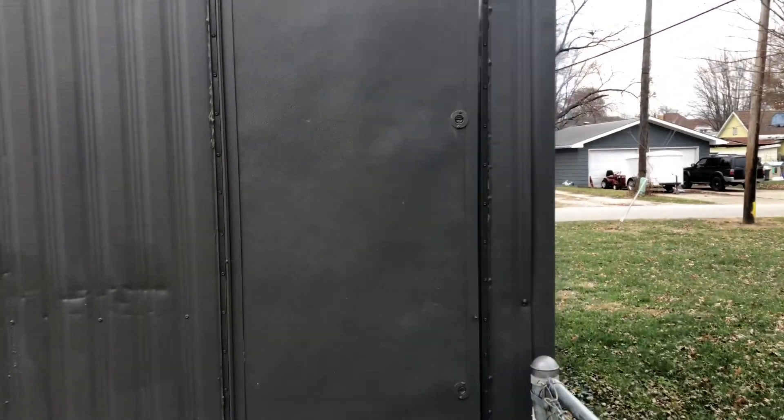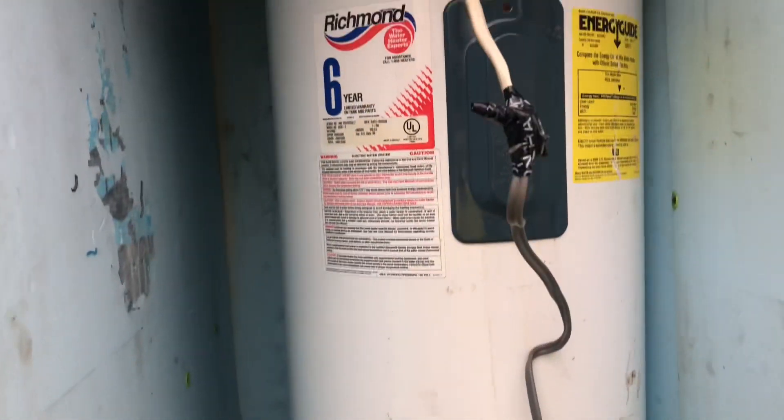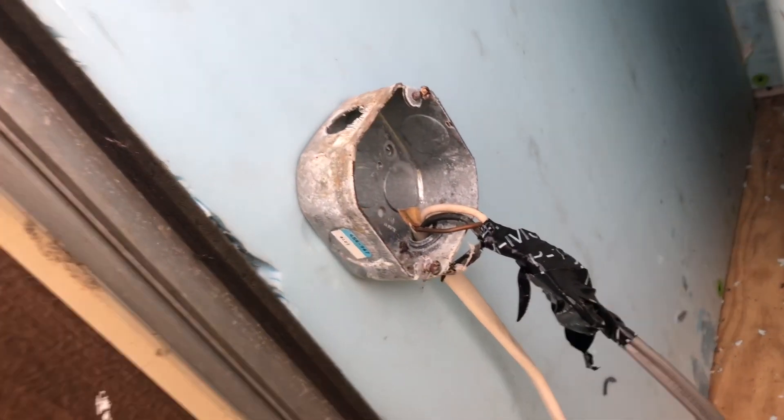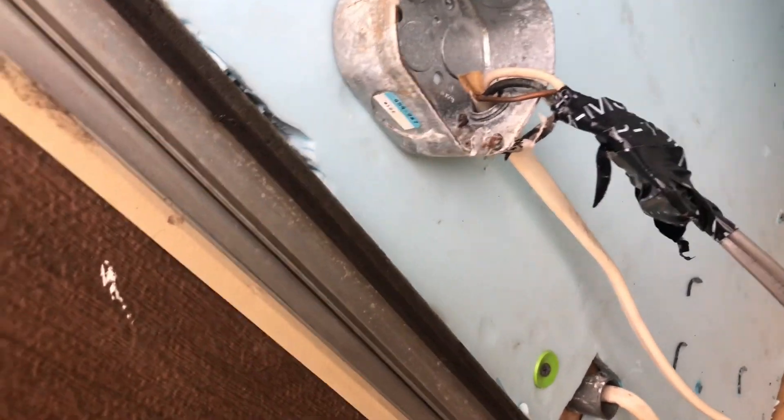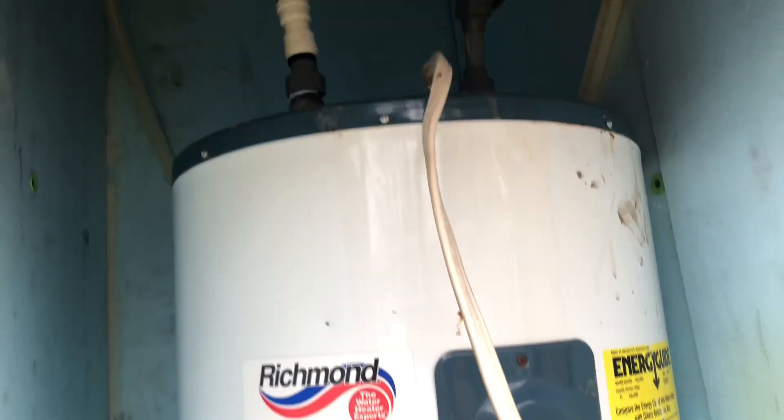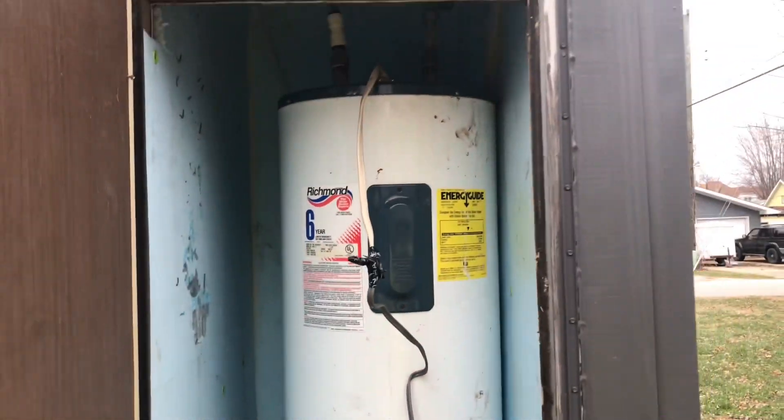Here we are at our water heater job. It's a little chilly out here this morning. It's about 30 something and windy. So, we prefabbed everything before we got here. So, hopefully, this won't take too long. But, there's the old one. Look at that quality wire in there. That will definitely be fixed. This is a mobile home 40 gallon, I believe. Alright, well, we'll get started here and I'll get you some more video as we go.